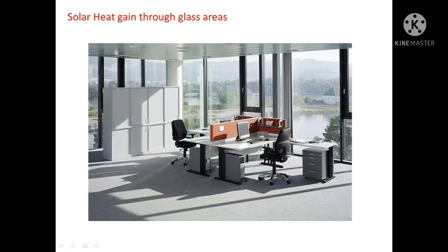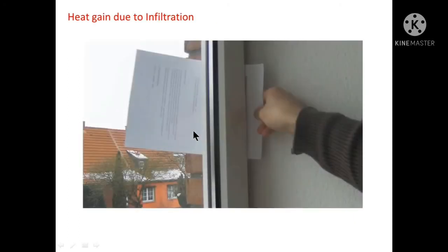Next is solar heat gain through glass areas. Through glass, solar heat gain can also occur; generally the value of solar heat gain through glass areas is given in the problem. Next is heat gain due to infiltration — there are various gaps in windows and doors, and heat gain from these gaps can be calculated by the product of mass flow rate and the enthalpy difference between outside air and the air of the conditioned space: Q = m·Δh.